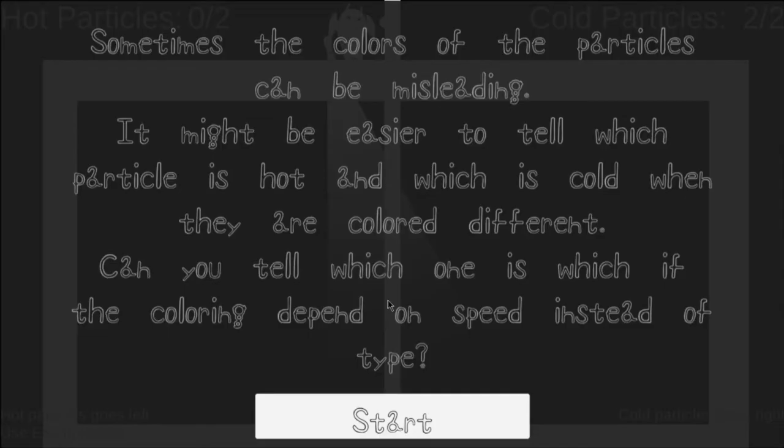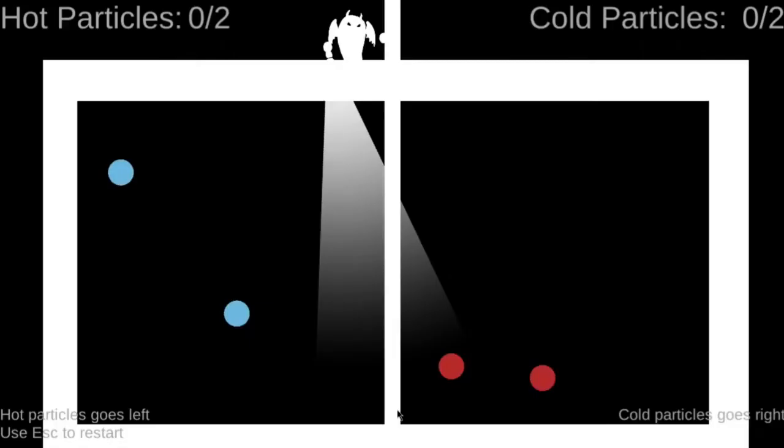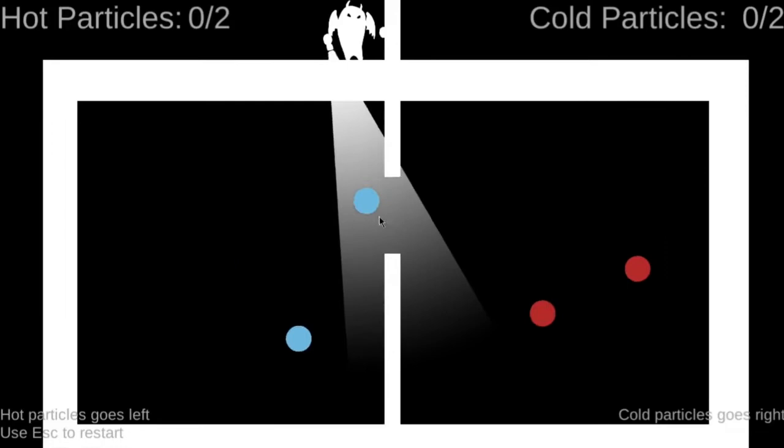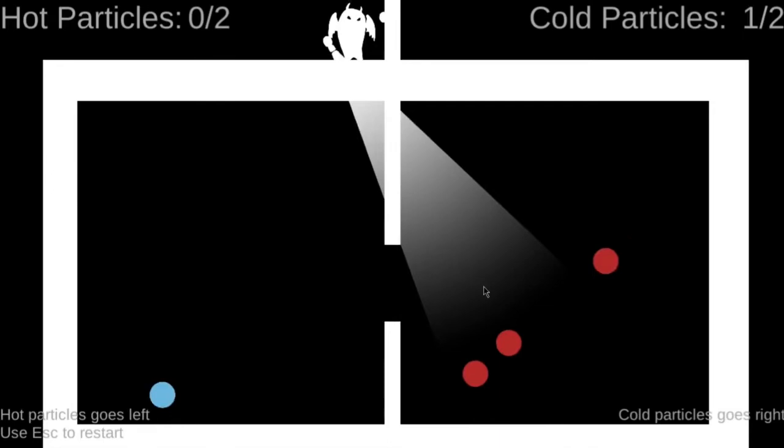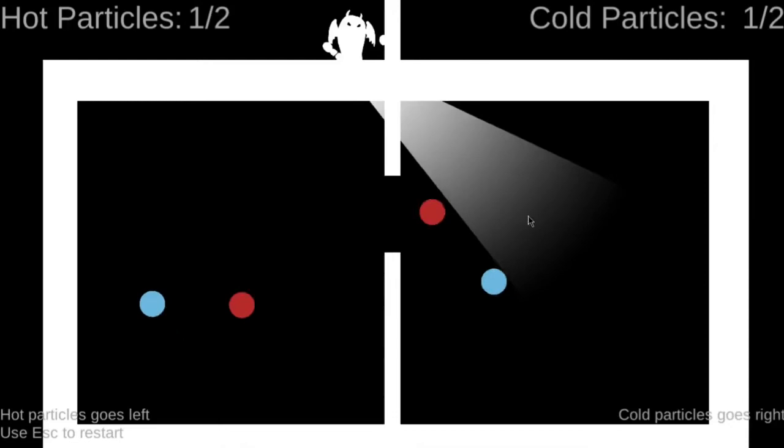This is one definition of the second law of thermodynamics. However, Maxwell suggests that in fact this definition is not necessarily true. In Maxwell's Demons, we have two containers separated with a moving gate.